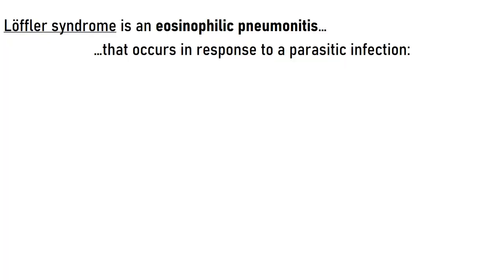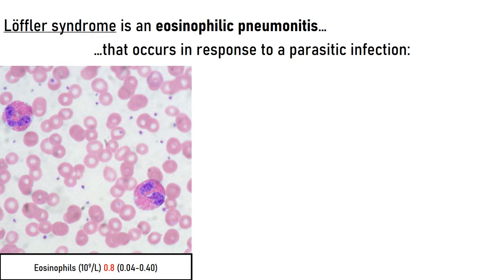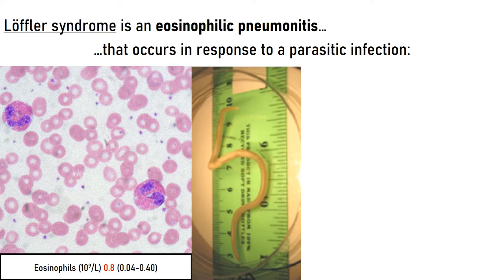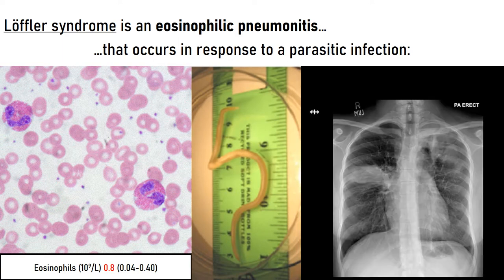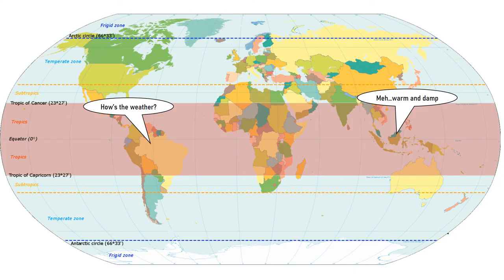Lofler's syndrome is an eosinophilic pneumonitis that occurs in response to a parasitic infection, for example Ascaris or Strongyloides. The syndrome is characterized by transient pulmonary infiltrates on chest x-ray. It is commoner in the warm, damp parts of the world, as memorably described in a 1968 BMJ article. So I'm going to try and remember this syndrome by thinking of a wheezy returning traveller.